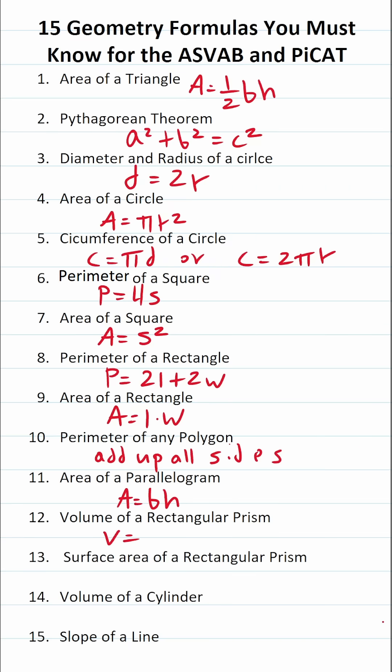Volume of a rectangular prism is going to be length times width times height. Surface area of a rectangular prism is going to be 2 length times width plus 2 length times height plus 2 width times height.